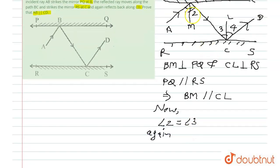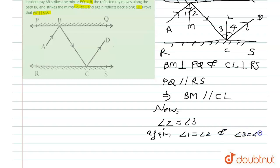Again, using the law of reflection at point B and the law of reflection at point C, we can say that angle 1 is equal to angle 2 — that is, angle of incidence equals angle of reflection. Similarly, angle 3 is equal to angle 4. So we have: angle 1 = angle 2, and angle 3 = angle 4.